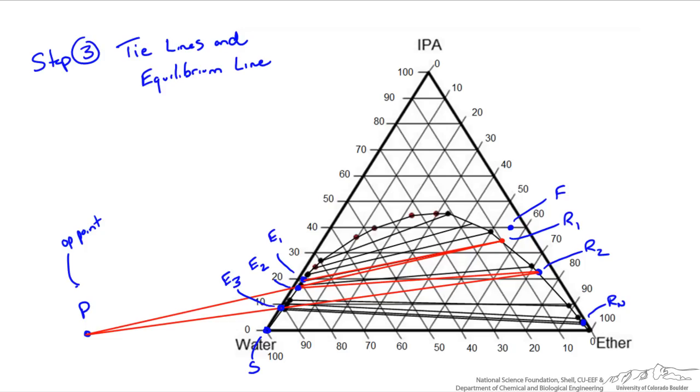Again we know R2 and E3 fall on the same line with P, so we draw a line to R2 and figure out where E3 is. I'll get rid of these lines to make it easier to see. Again we follow the tie line from E3, and this time we get to our Rn. Based on this we have drawn 3 tie lines or 3 equilibrium lines for our stages, so we would have 3 stages.